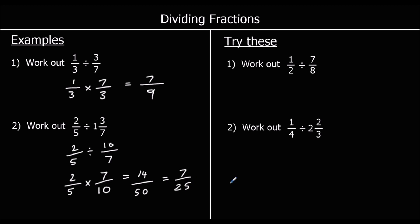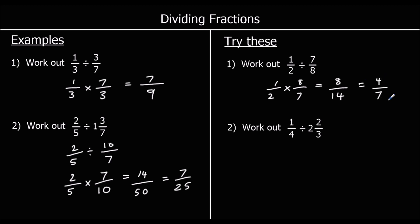Two for you to try. Question one: one-half divided by seven-eighths. Dividing by seven-eighths is the same as multiplying by eight-sevenths. Times the top: one times eight is eight. Times the bottom: two times seven is fourteen. This simplifies by halving top and bottom, giving four-sevenths.